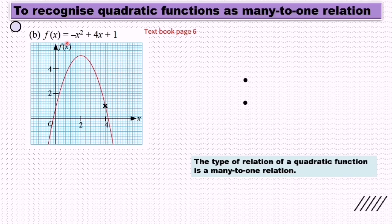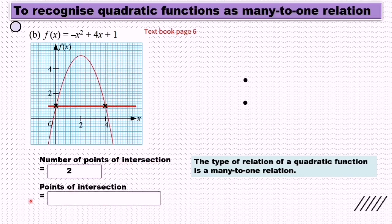For part (b), f(x) = -x² + 4x + 1. If I draw a line parallel to the x-axis, the number of points of intersection is 2. The points of intersection are (0, 1) and (4, 1).